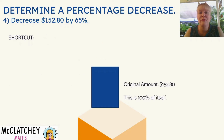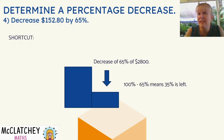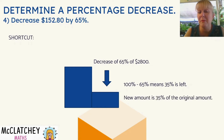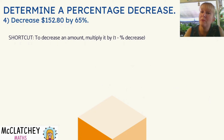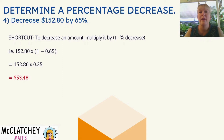Let's look at the shortcut. Here's our original amount, $152.80 — it's 100% of itself. We're going to decrease that by 65%, which is almost two thirds. If we take away 65%, that means we've got 35% left because 100 take away 65 is 35. So we could find what 35% is of that original amount. To decrease an amount, we multiply the original amount by 1 minus the percentage decrease. So: 152.80 times (1 − 0.65), which is the same as $152.80 times 0.35, which gives us the same answer, $53.48. We get to the same place — it just gets us there a little bit quicker.